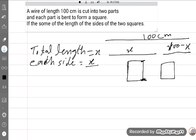Each side is x upon 4, and what is the area? Area is x upon 4 squared. That's a single side squared.